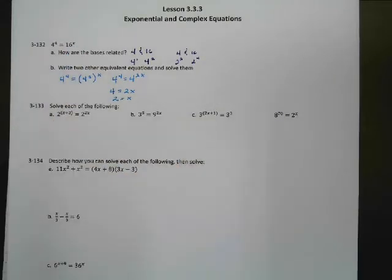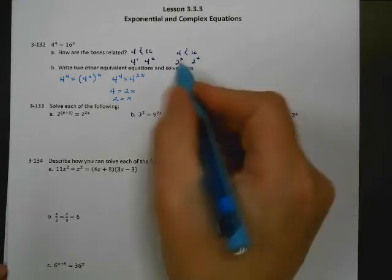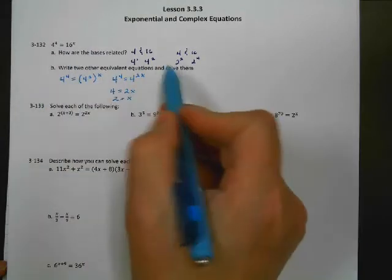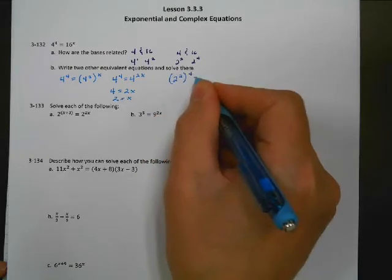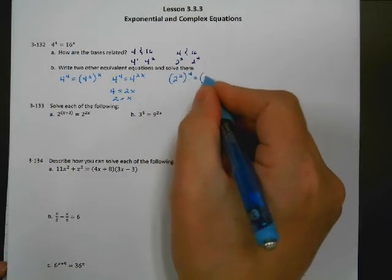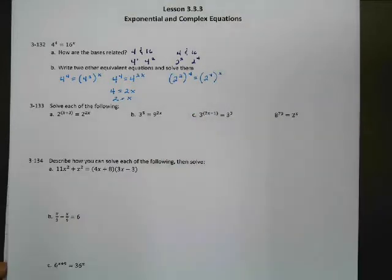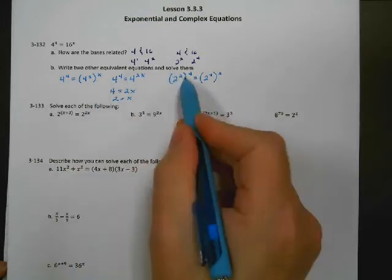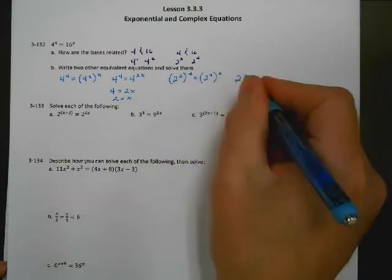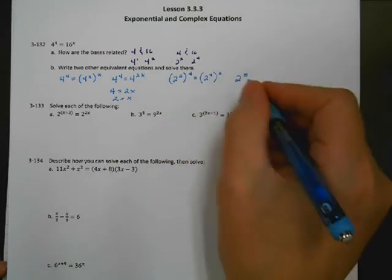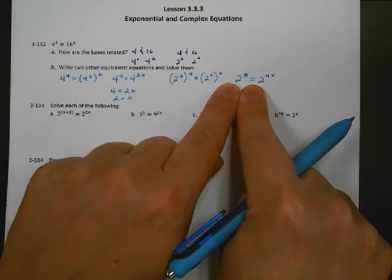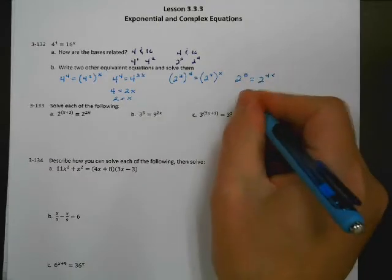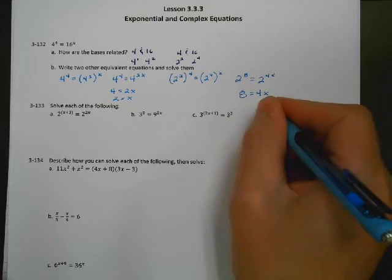We can verify: 16 to the 2nd power is 256 and 4 to the 4th power is 256. The other way to look at it is using a base of 2. So 4 is 2 to the 2nd raised to the 4th, and 16 is 2 to the 4th raised to the x. Power to a power: multiply the exponents, giving 2 to the 8th equals 2 to the 4x. Same base, so 8 equals 4x, divide by 4, and x equals 2.